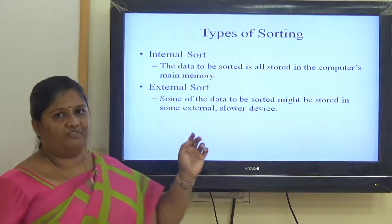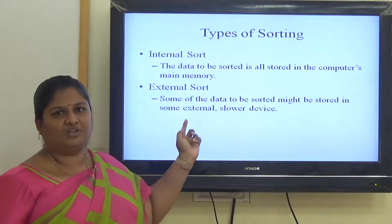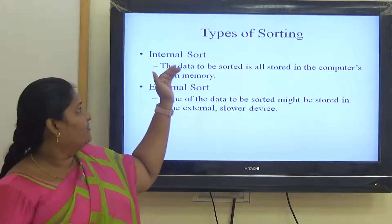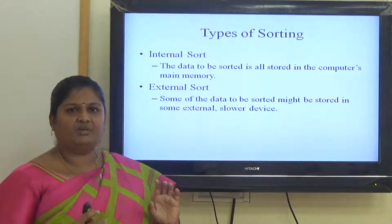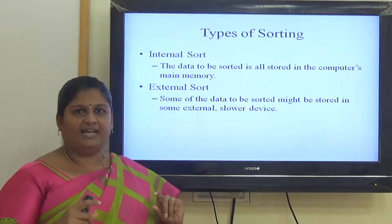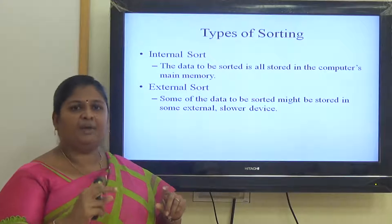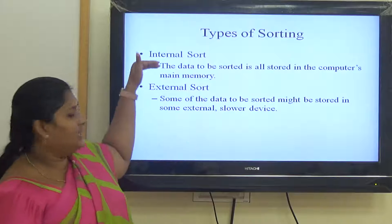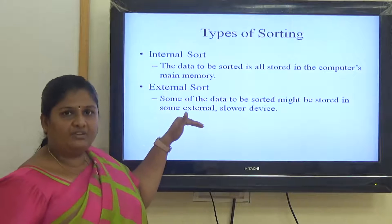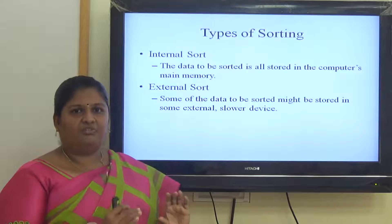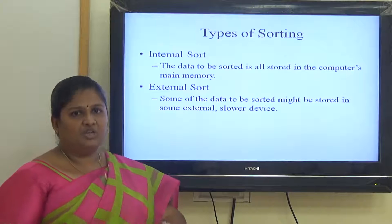Types of sorting. We have two types of sorting: one is internal sorting and the other one is external sorting. Internal sorting is arranging the data items within the space provided — for example, when we have an array of data items, we are just swapping or interchanging within the same array. When we come to external sorting, not only the space provided, we are taking some other spaces that are allocated, and we are using the sorting algorithm.